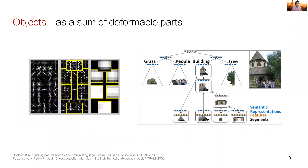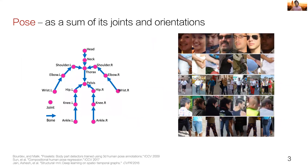In our workshop, we will discuss compositionality in computer vision — the notion that the representation of the whole should be composed of the representation of its parts. People understand the world as a sum of its parts, and with this intuition in mind, the vision community has been developing compositional representations for decades. Representing objects as a collection of deformable parts has led to deformable parts models and recursive neural networks. Representing human pose as a sum of its joints and orientations has led to the development of poselets, structural regression, and structural RNNs.